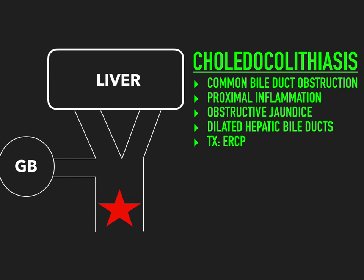What choledocholithiasis does cause is obstructive jaundice. Because you can't drain bilirubin from the biliary tree, you have a backup of bilirubin and the patient becomes jaundiced — they'll turn yellow, get scleral icterus, their tongue and mouth will become yellow, and they'll have elevated bilirubin levels. Pathognomonic for choledocholithiasis are dilated hepatic bile ducts, because the liver is trying to drain into the obstructed area and can't, causing the ducts to back up and dilate.